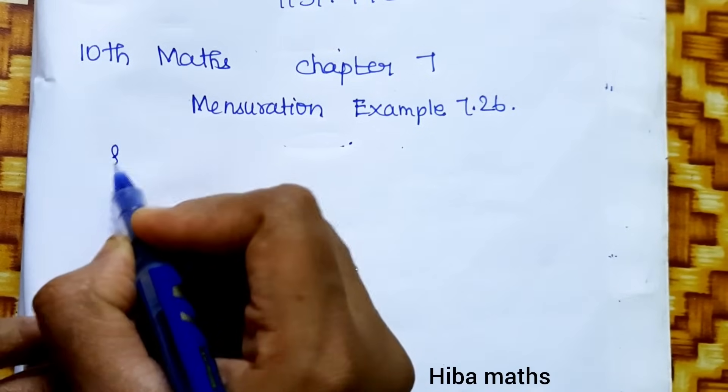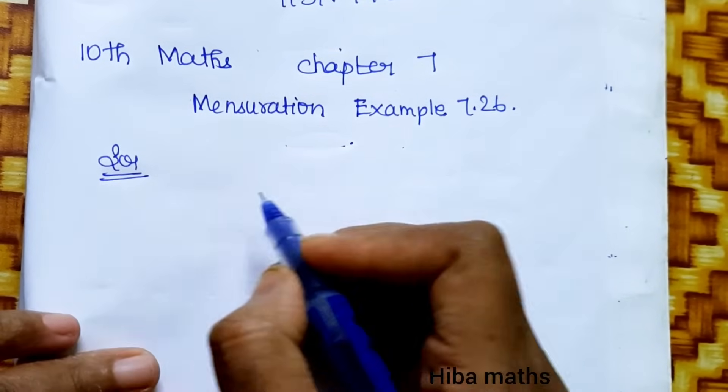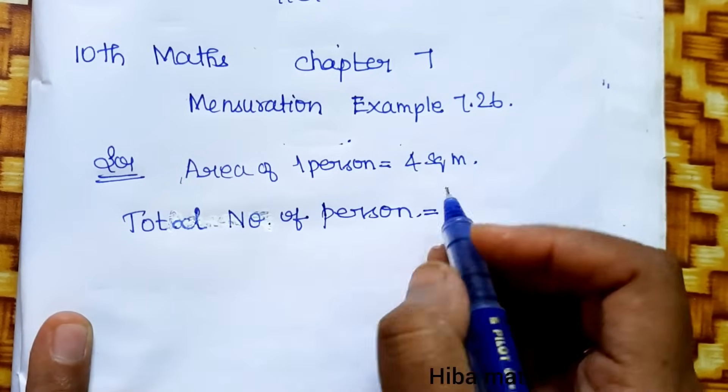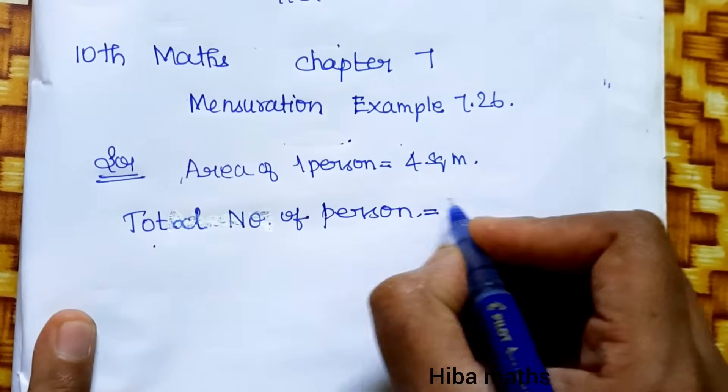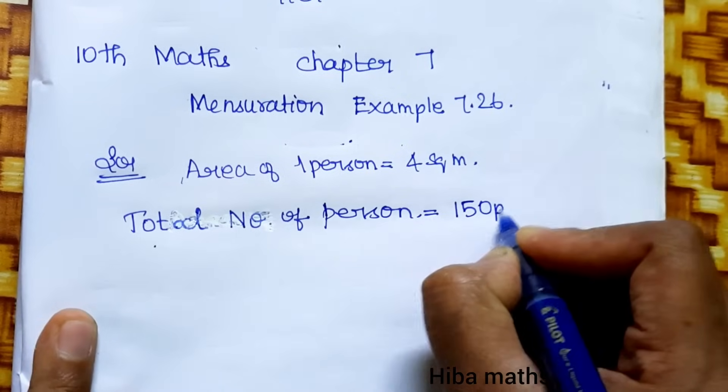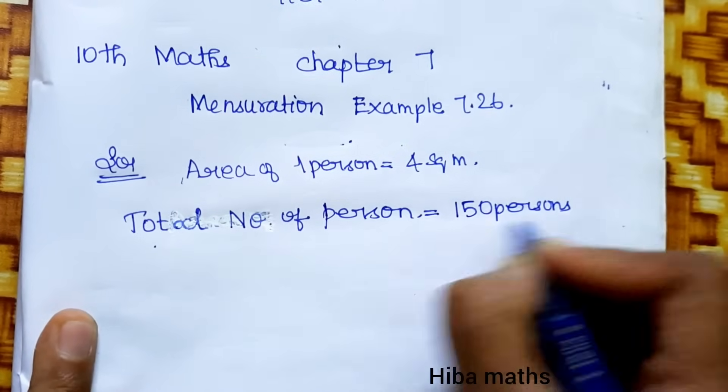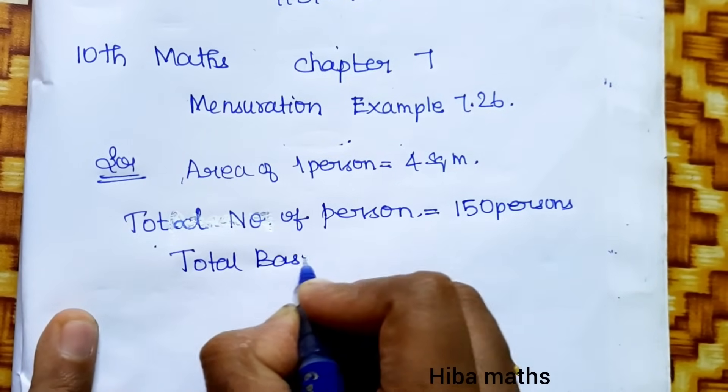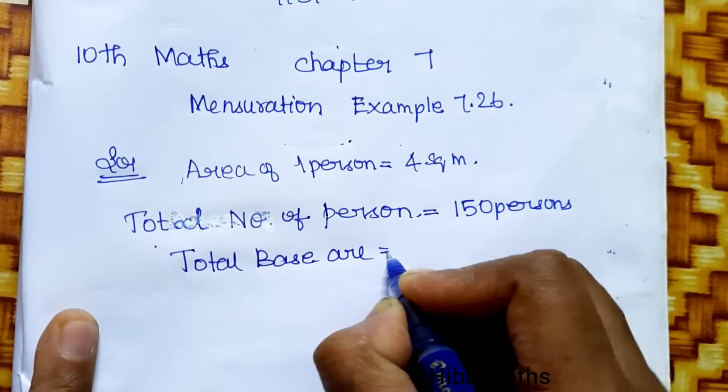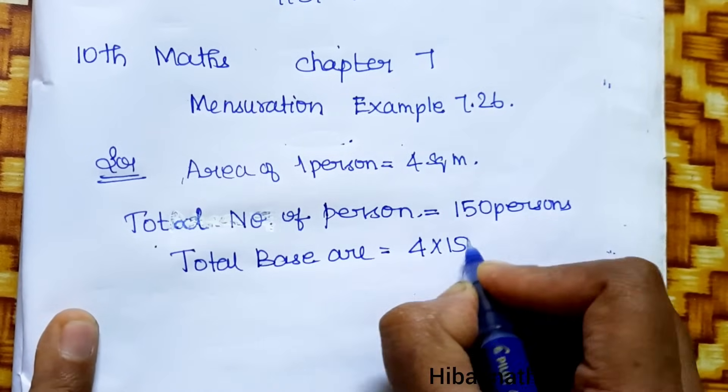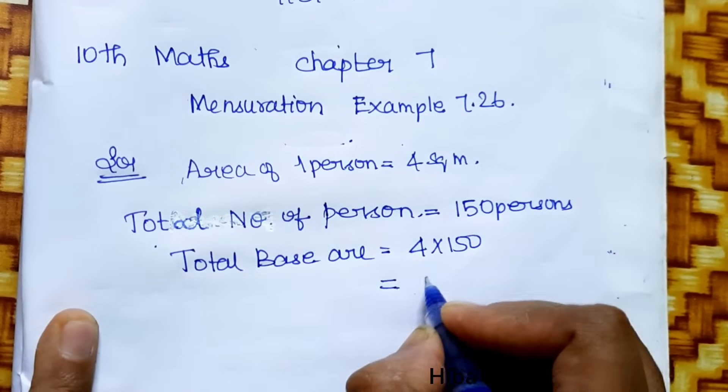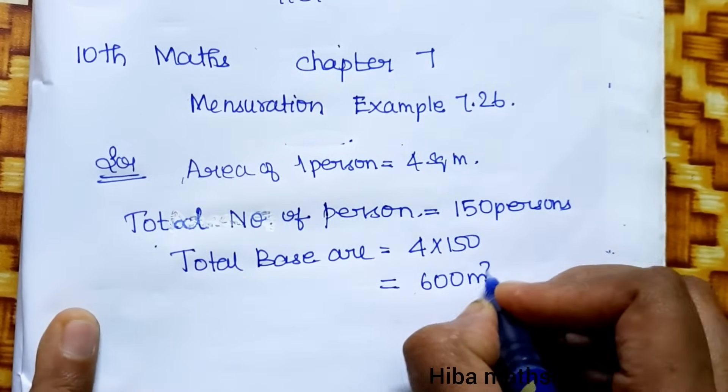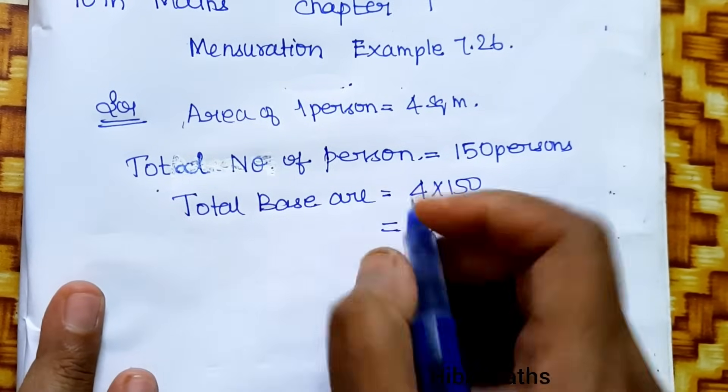In the solution, the area for one person requires 4 square meters, and the total number of persons is 150. Now, the total base area is 4 times 150, so πr² equals 600 square meters. This is the base area.